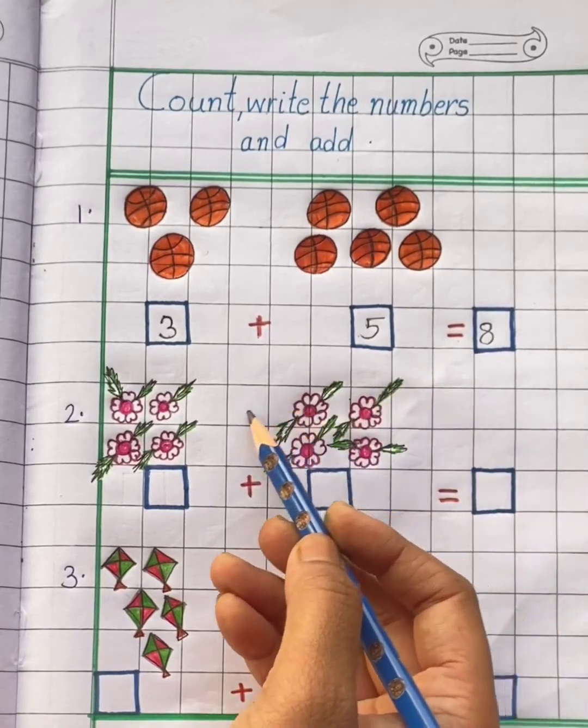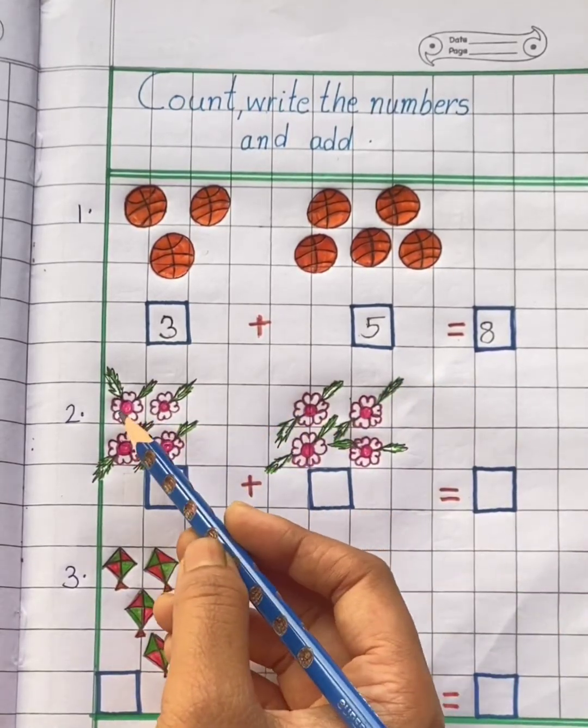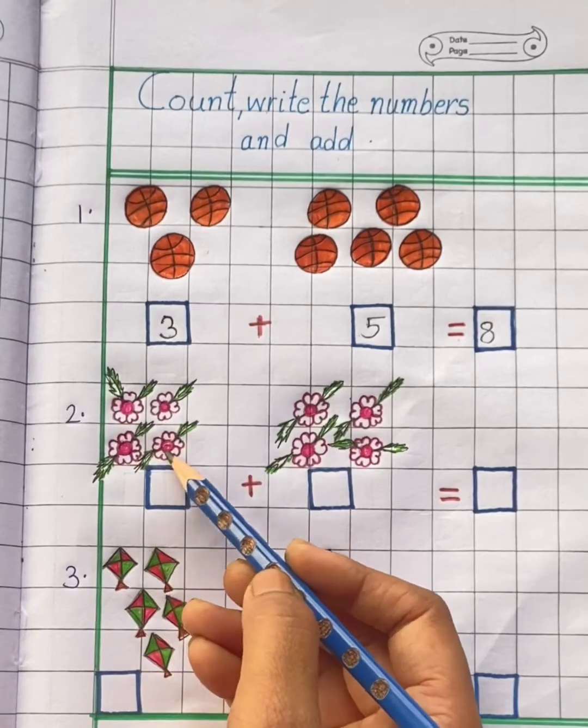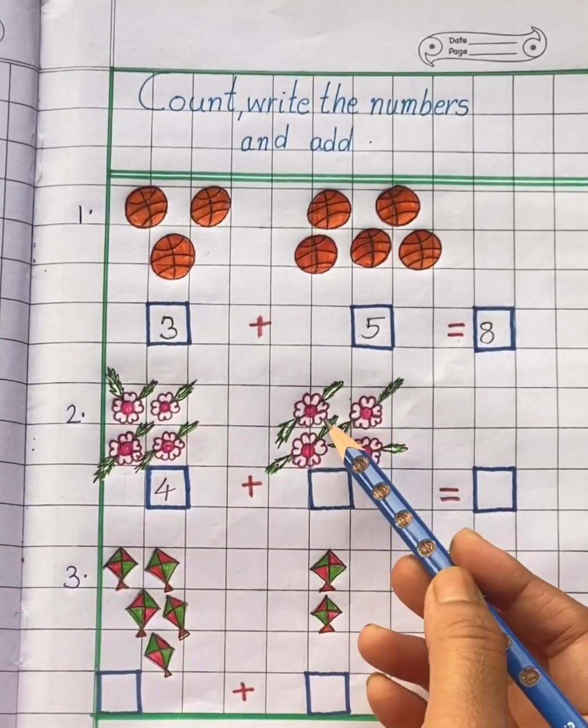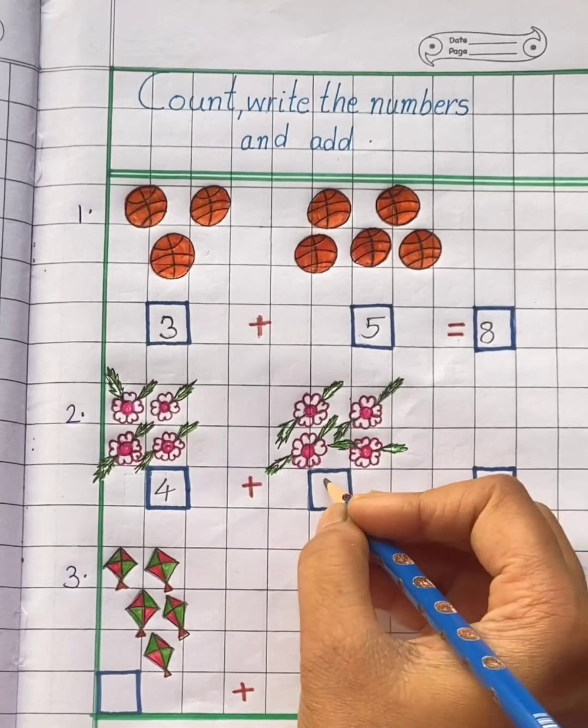Now look here. Here we have 1, 2, 3, 4. 4 flowers. And here we have 1, 2, 3, 4. 4 flowers.